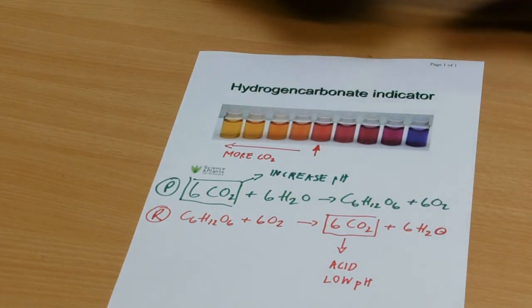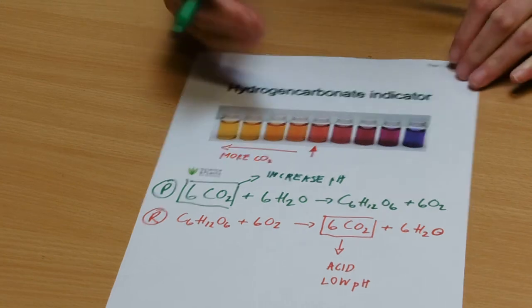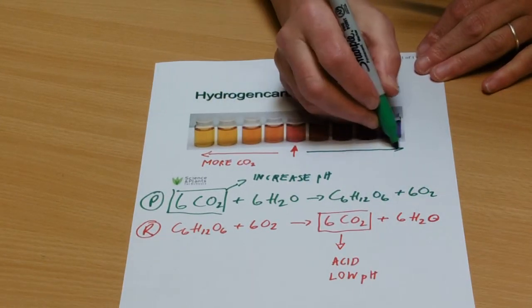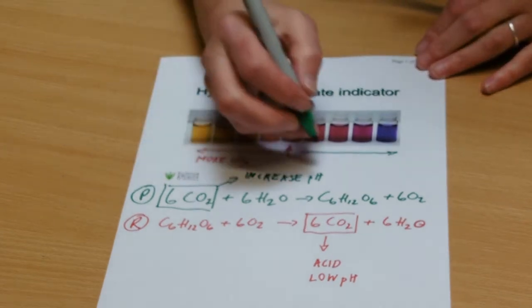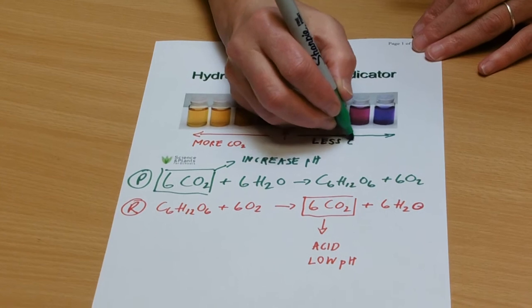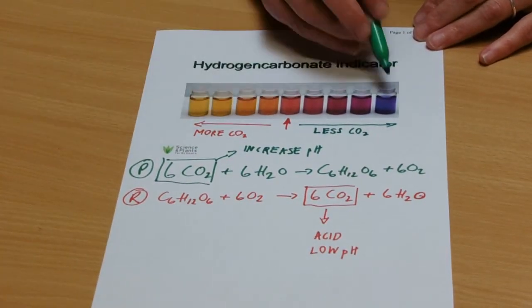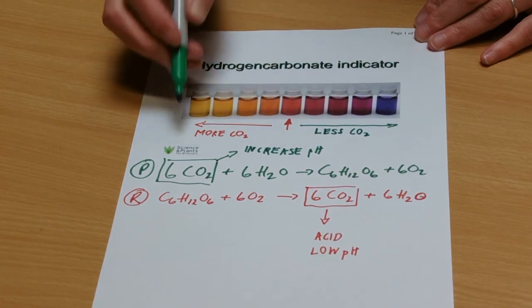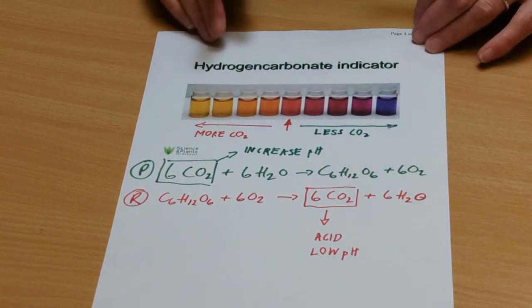And if it goes this way, we've got less CO2 because we've used it up and that means that photosynthesis is going faster and this side means that respiration is going faster.